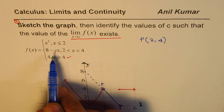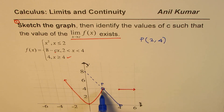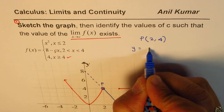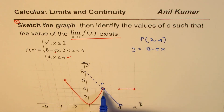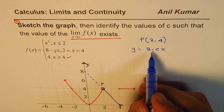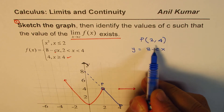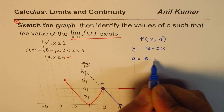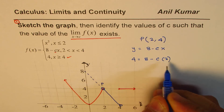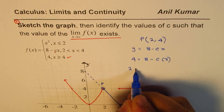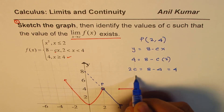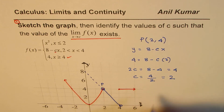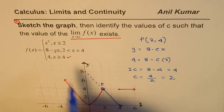To find the value of c, we use the fact that point P = (2, 4) lies on y = 8 − cx. Substituting x = 2 and y = 4: 4 = 8 − c·2. Rearranging, 2c = 8 − 4 = 4, so c = 4/2 = 2. Therefore c = 2.